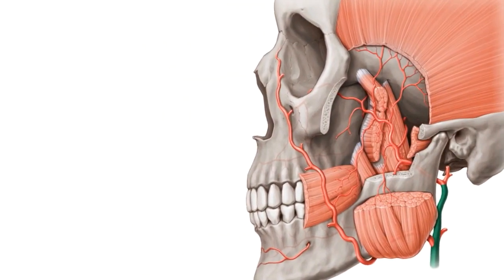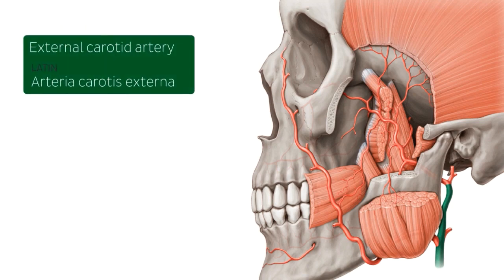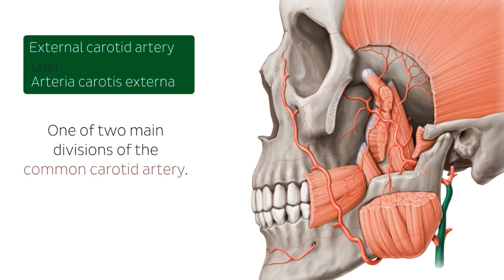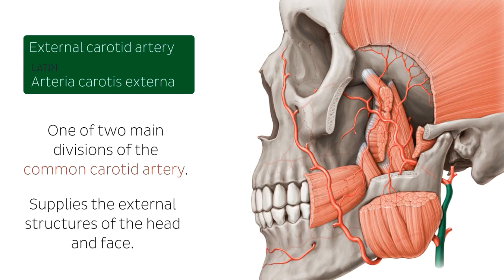Before we talk about the maxillary artery I would like to highlight the external carotid artery. The external carotid artery is one of the two main divisions of the common carotid artery, the other being the internal carotid artery. The bifurcation of the common carotid occurs at the level of the thyroid cartilage, at which point the external carotid climbs the lateral sides of the neck within the carotid sheath and gives off branches to the neck region, supplying the external structures of the head and face.